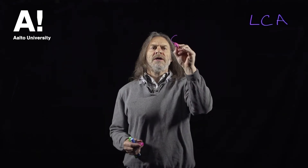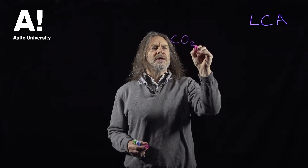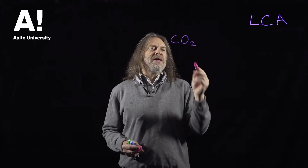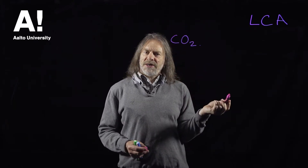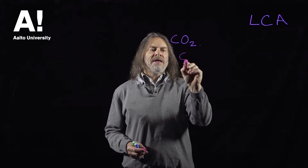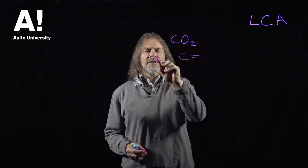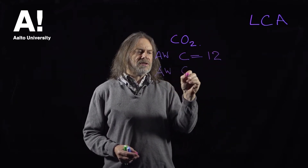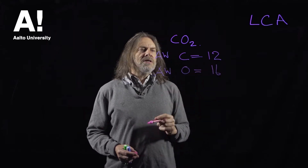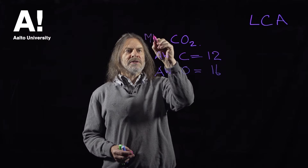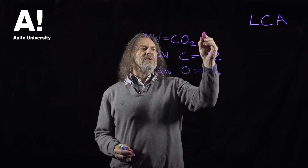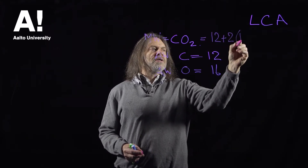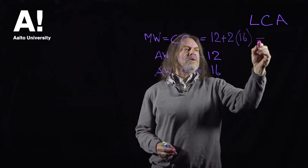I need to say a little bit about carbon dioxide. You'll see this written in all sorts of ways — that is the way to write it. Carbon dioxide is made of one carbon atom and two oxygen atoms. The atomic weight of carbon is 12 and the atomic weight of oxygen is 16. So the molecular weight of carbon dioxide is 12 plus 2 times 16, which is 32, equals 44.